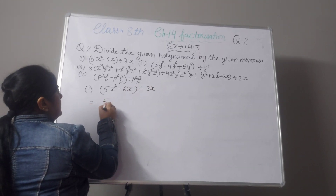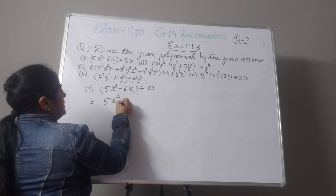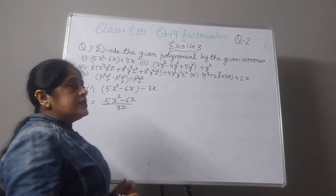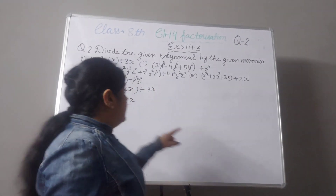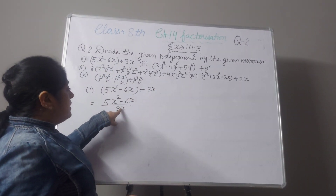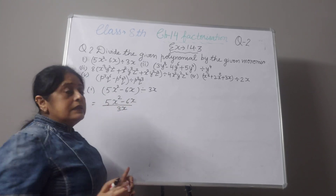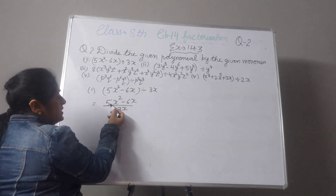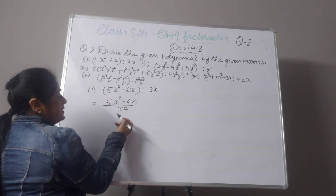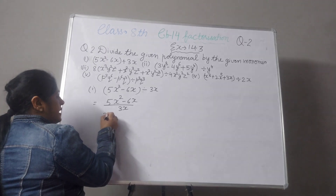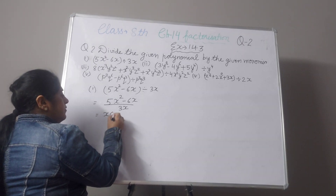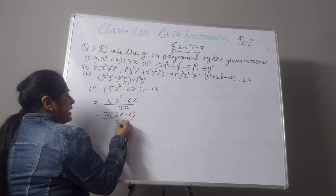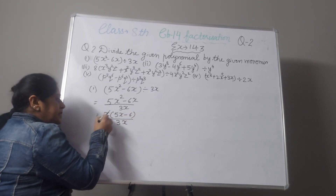We will write 5x² minus 6x divided by 3x. Most students make the mistake of cutting this single term directly with the denominator. We cannot cut this term directly — we have to take common first. Look at 5x² and 6x: what is common? It is x. Write x outside, and inside 5x minus 6 will be left, divided by 3x. Now you can cancel this x with x.